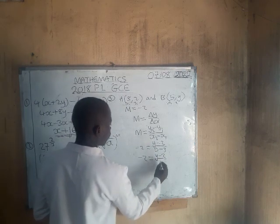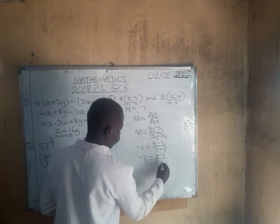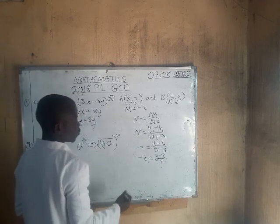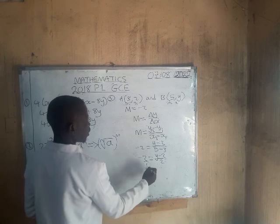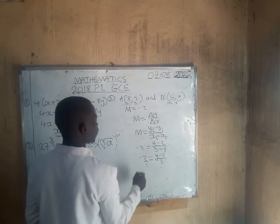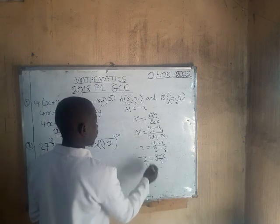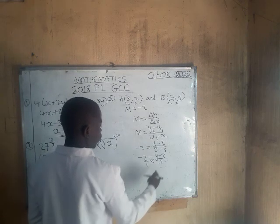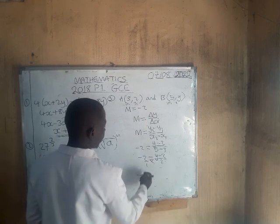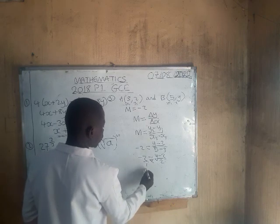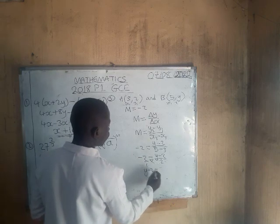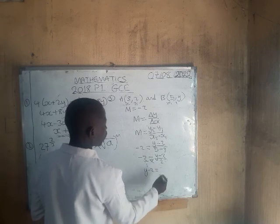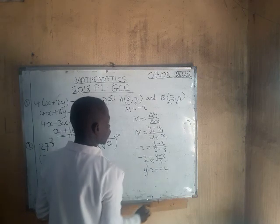We have negative 2 equals (y minus 2) over 2. We introduce the denominator on the left side as 1, then cross-multiply: y minus 2 times 1 equals negative 2 times 2, giving y minus 2 equals negative 4.